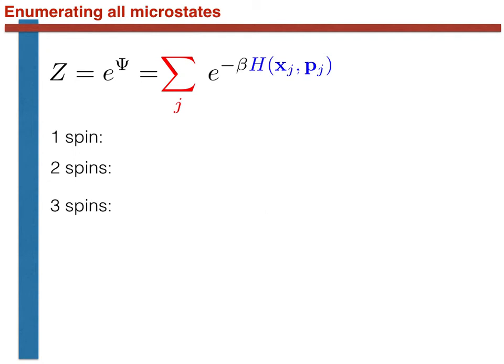Having discussed the Hamiltonian, let's now move to the second thing we need to do to calculate the partition function: we need to perform the sum over microstates. If we have a single spin, this is relatively simple. The single spin can be in one of two states, spin up or spin down. We thus need to perform a single sum over the two possible values for this one spin variable, as shown here.